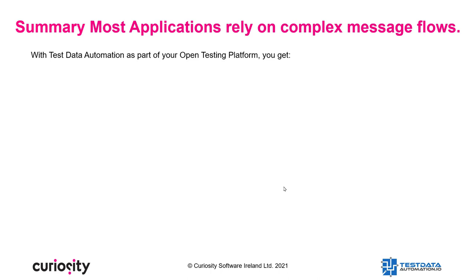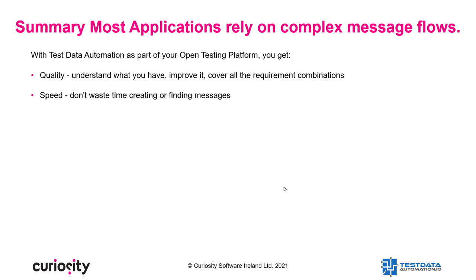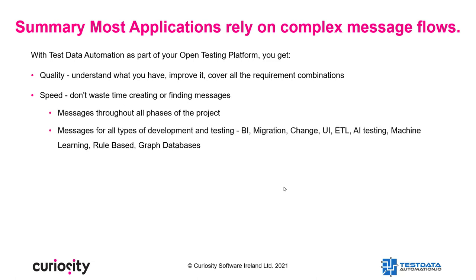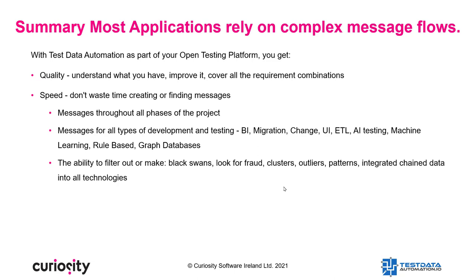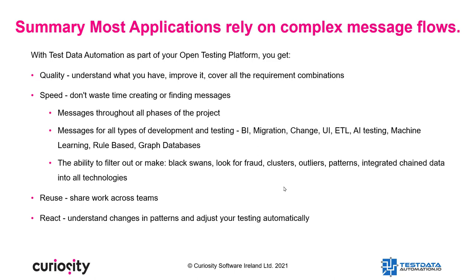So that's the end of the demo. Let me summarize what we've just seen. With test data automation as part of your open testing platform, you get quality — you understand what you have, you can improve it, and you can cover all the requirement combinations of valid and invalid data. Speed — you won't waste time creating or finding messages throughout all phases of the project. Messages are available for all types of development: BI, migration, graph databases, ETL, AI, machine learning, etc. You have the ability to filter out or make black swans, look for fraud clusters, outliers, patterns, integrated chained data — all into all technologies. You can reuse and share work across teams, react to and understand changes in pattern, and adjust your testing automatically.